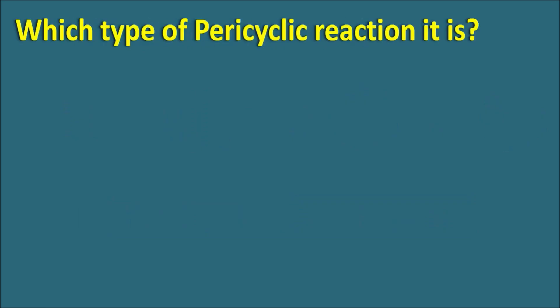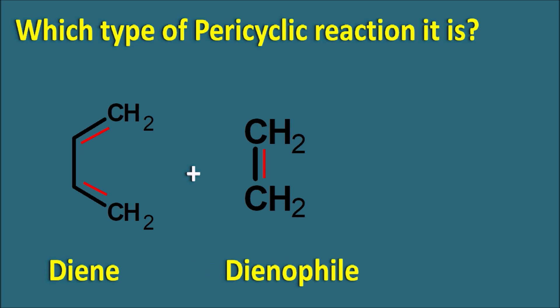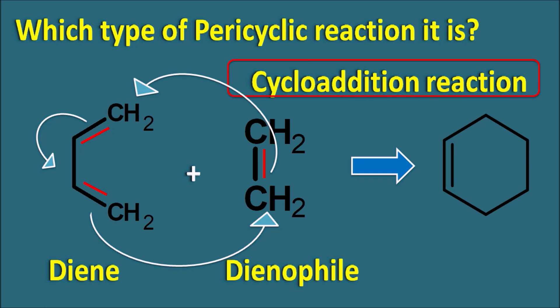Which type of pericyclic reaction is the Diels-Alder reaction? Taking 1,3-butadiene as the diene reacting with a dienophile, the pi bonds shift in a cyclic fashion, and because of this delocalization they form a cyclic product with new sigma bonds. That is why this type of reaction is called a cycloaddition reaction. Cycloaddition reactions are classified based on the number of pi electrons involved. So we need to determine which type of cycloaddition the Diels-Alder reaction is.